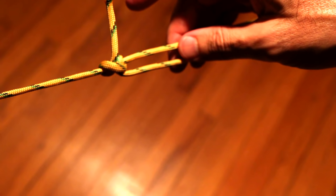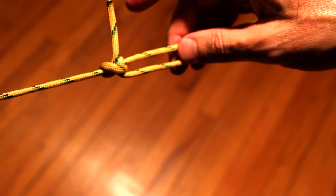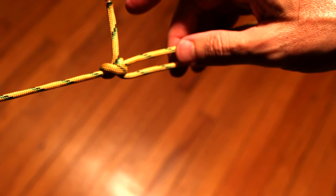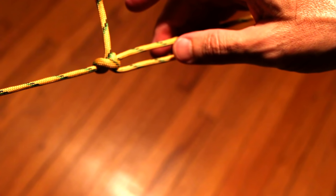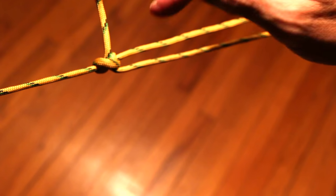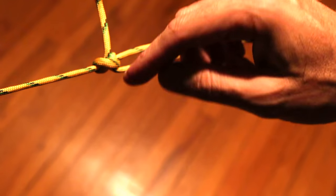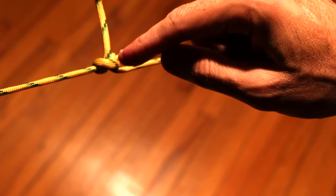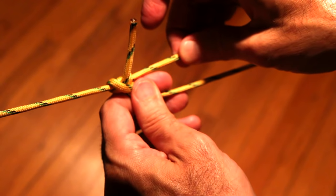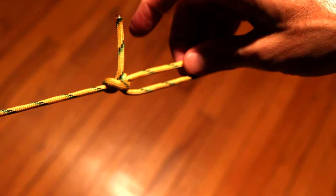But either the rolling hitch or the taut line hitch that are almost exclusively used in this context, neither one of them are great knots for this. They're both borrowed from sailing and they are great knots for wrapping a smaller line onto a bigger line, taking the tension off the big line.